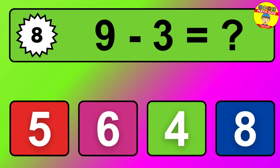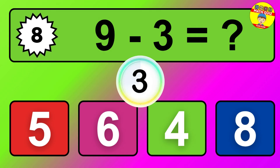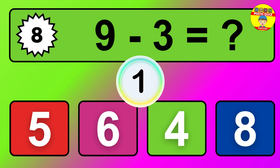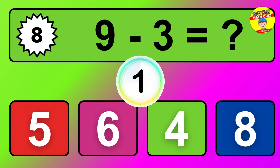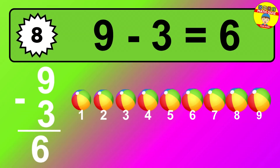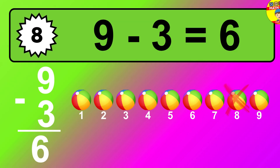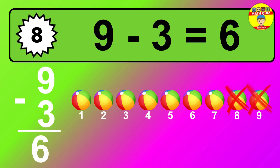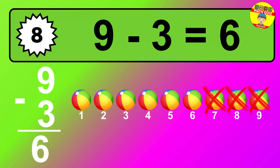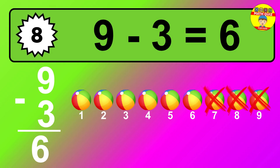Question 8. 9 minus 3 equals what? The answer is 9 minus 3 is 6. Let's count it: 1, 2, 3, 4, 5, 6.